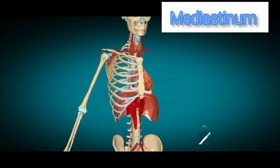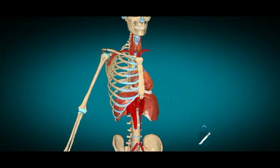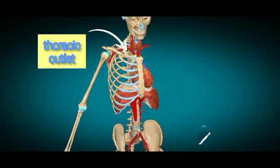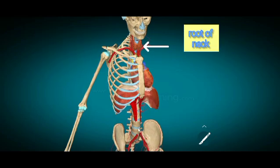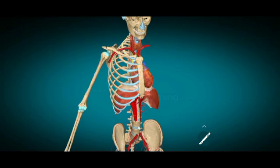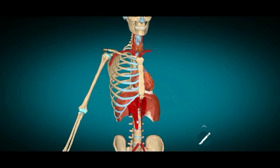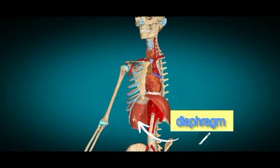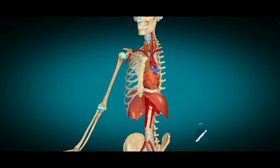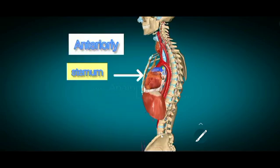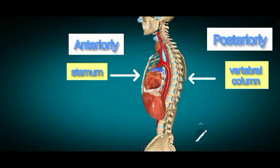In this tutorial we are going to talk about the mediastinum. The mediastinum is a thick movable partition that extends superiorly to the thoracic outlet and the root of the neck, and inferiorly to the diaphragm. It extends anteriorly to the sternum and posteriorly to the vertebral column.